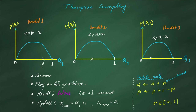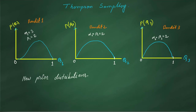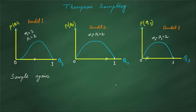Let's say we play the first bandit and we win, getting a positive reward. Since we won, we update alpha by plus one and keep beta as it is. After this update, the first bandit's distribution has alpha equal to 3 and beta equal to 2, making it a bit sharper than the other distributions. In the second iteration, we again sample Q values from each distribution.